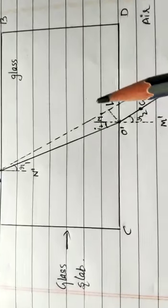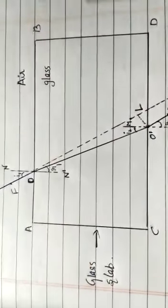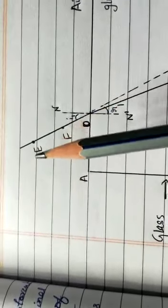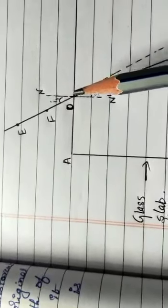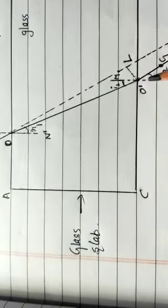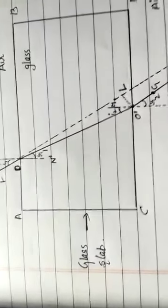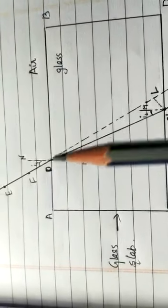Compare the angle of incidence with the angle of refraction at both refracting surfaces AB and CD. The ray EO is obliquely incident on surface AB — EO is called the incident ray. OO' is the refracted ray, and O'H is the emergent ray. You may observe that the emergent ray O'H is parallel to the direction of the incident ray EO.